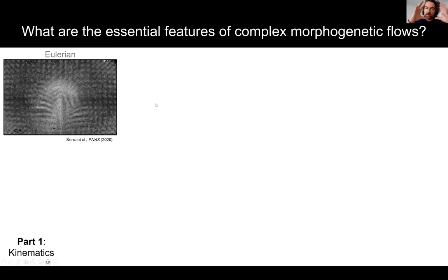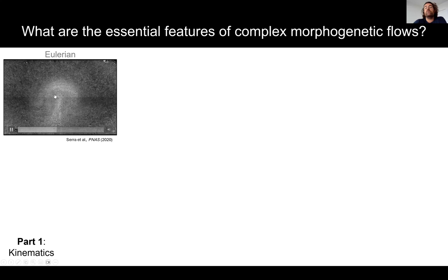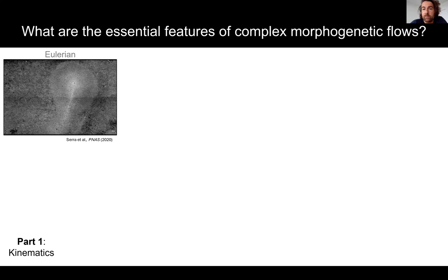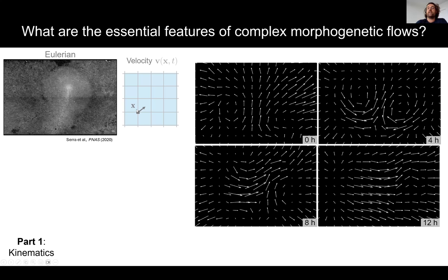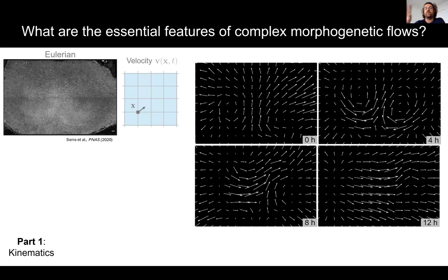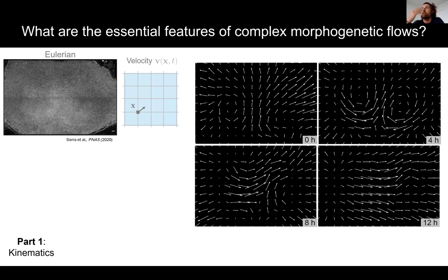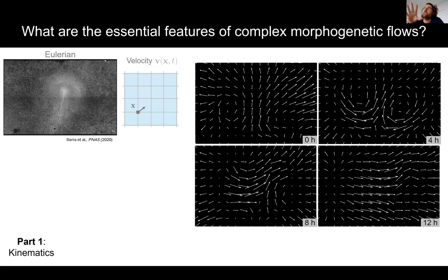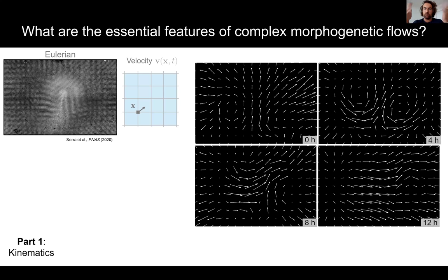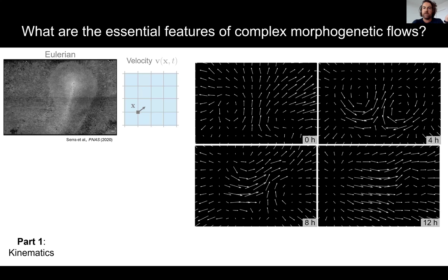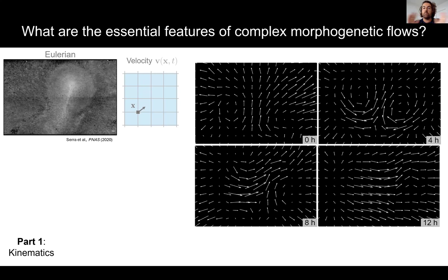When you put this embryo under a confocal microscope, you can extract velocity fields using PIV. To study these multicellular flows, you can use Eulerian approaches — looking at velocities at fixed Eulerian coordinates — giving streamlines or velocity snapshots at different times. However, this Eulerian approach has bottlenecks recognized in continuum mechanics. The most important one is being frame dependent: if you change the coordinate system or if the embryo slightly drifts under your microscope, the structures of these velocities will completely change.